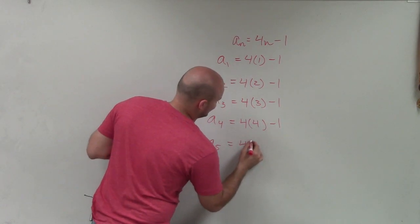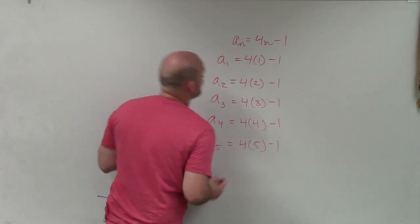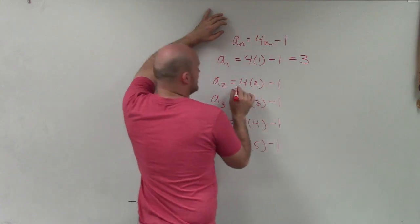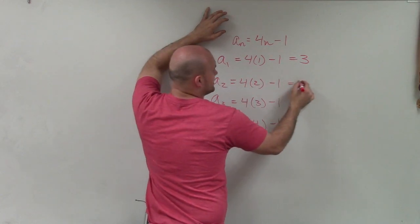Isn't this fun? OK, so now I'll apply order of operations. 4 times 1 is 4, minus 1 equals 3. 4 times 2 is 8, minus 1 is 7.